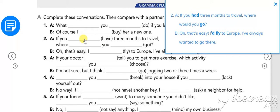So number two: if you had three months travel where would you go? Answer for B: oh that's easy, I'd fly to Europe.